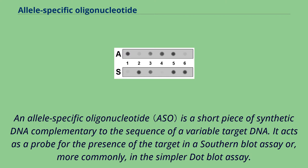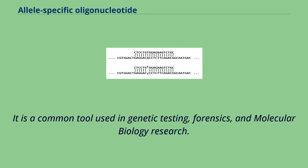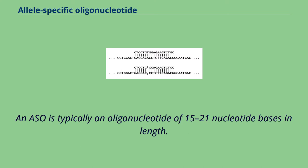An allele-specific oligonucleotide (ASO) is a short piece of synthetic DNA complementary to the sequence of a variable target DNA. It acts as a probe for the presence of the target in a Southern blot assay or, more commonly, in the simpler dot blot assay. It is a common tool used in genetic testing, forensics, and molecular biology research, and is typically an oligonucleotide of 15 to 21 nucleotide bases in length.